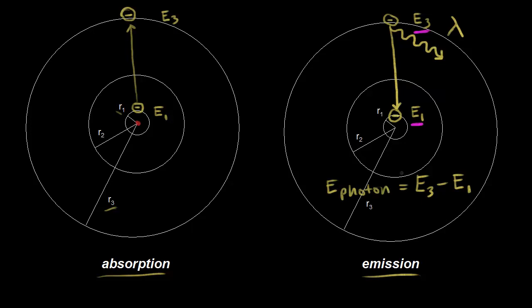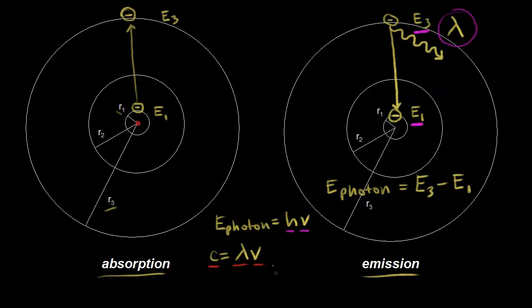We know the energy of a photon is equal to hν, where h is Planck's constant and ν is the frequency. But we want to think about wavelength, so we need to relate frequency to wavelength. The equation that does that is c = λν, where c is the speed of light, λ is the wavelength, and ν is the frequency. Solving for frequency: ν = c/λ.